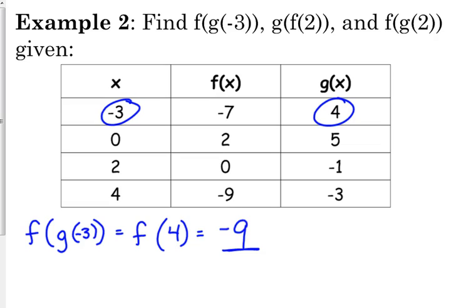Okay, the first column are your x values. The second two columns are the f of x. So when x is negative 3, f of negative 3 is negative 7. f of 0 is 2. f of 2 is 0. f of 4 is negative 9. g of negative 3 is 4. g of 0 is 5. This is just like a table of values. I've got two functions up here at the same time. Two different functions. Same x values.